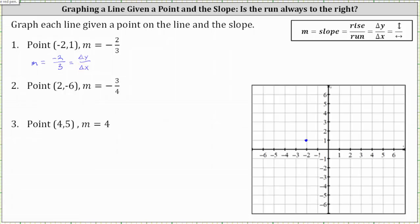From the point we just plotted, because the rise or change of y is negative two, we would go down two units. And then because the run or change of x is positive three, we would move right three units. This is the location of another point on the line. We can do this multiple times: down two, right three, down two, right three.